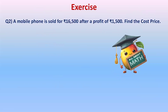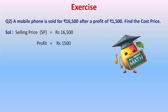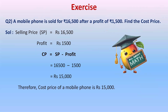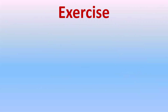Another question: a mobile phone is sold for sixteen thousand five hundred rupees after a profit of one thousand five hundred rupees. Find the cost price. Selling price is sixteen thousand five hundred rupees and profit is one thousand five hundred rupees. Since we are finding cost price with profit, we subtract: cost price equals selling price minus profit — sixteen thousand five hundred minus one thousand five hundred equals fifteen thousand rupees. Therefore, the cost price of the mobile phone is fifteen thousand rupees.